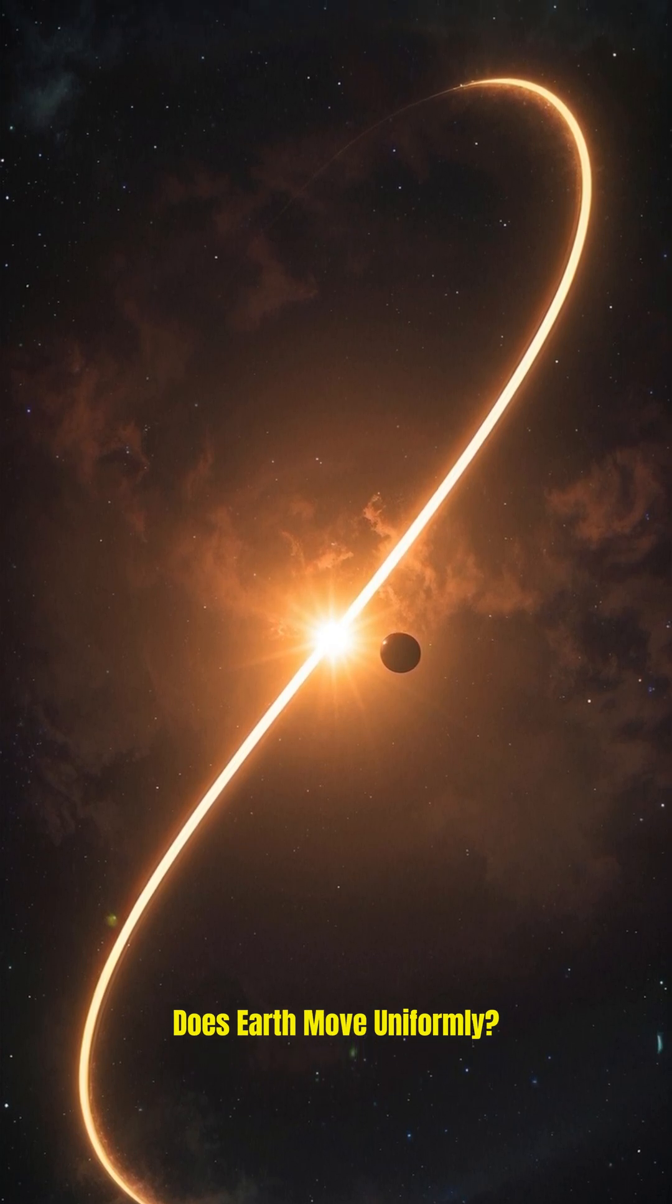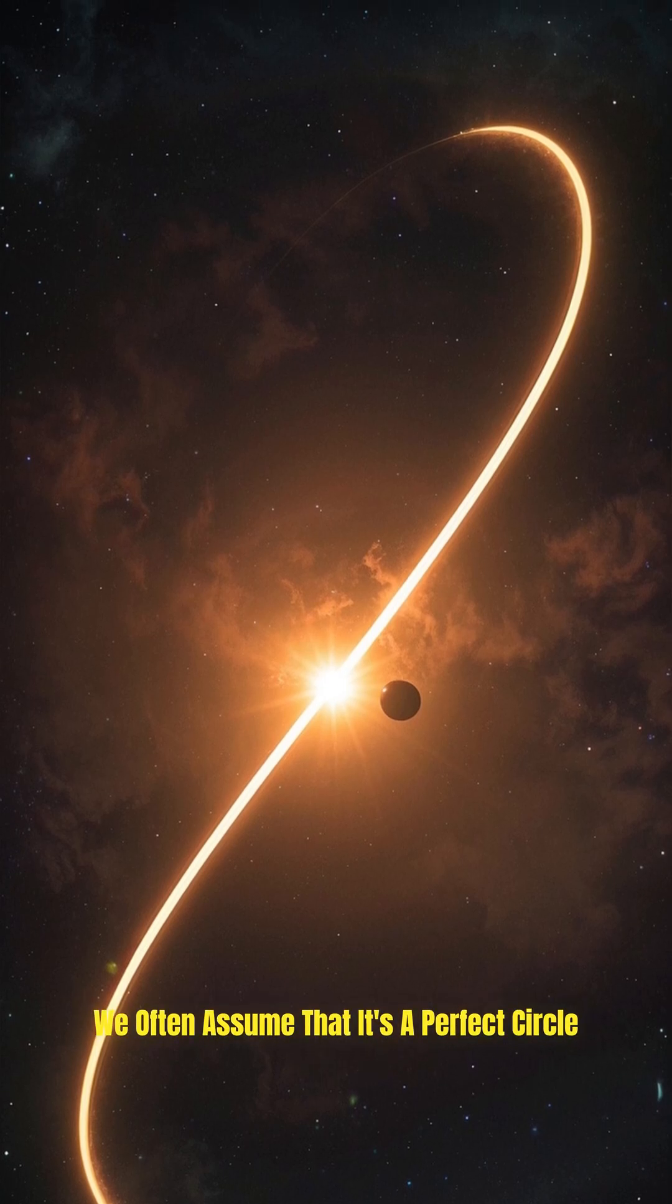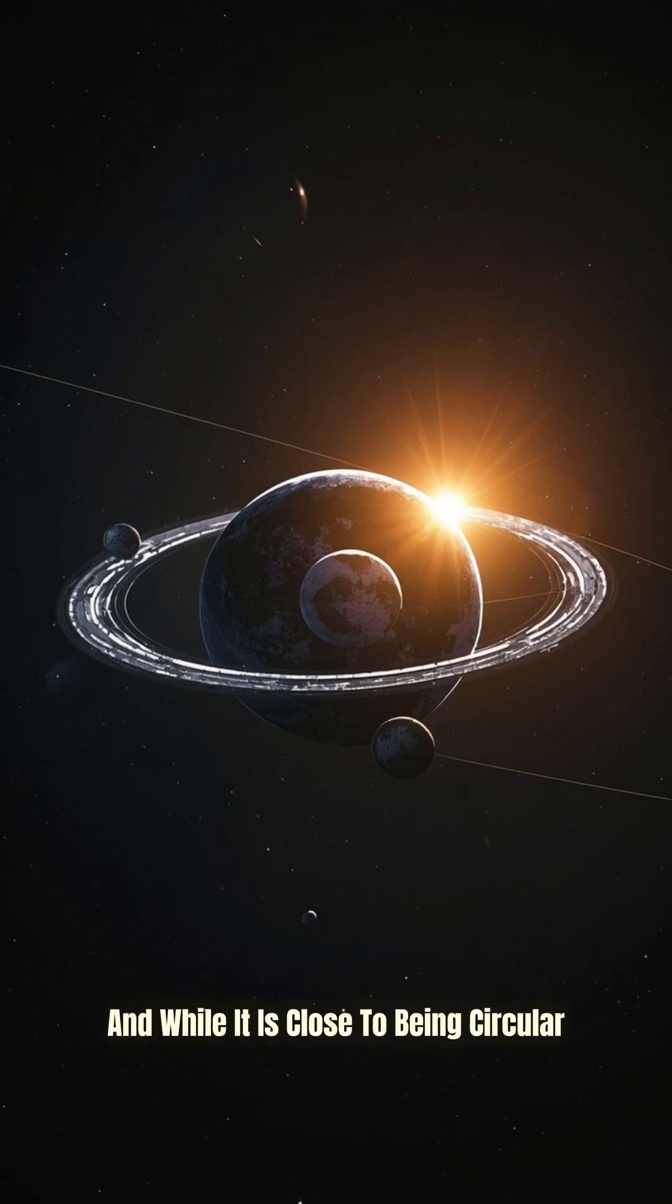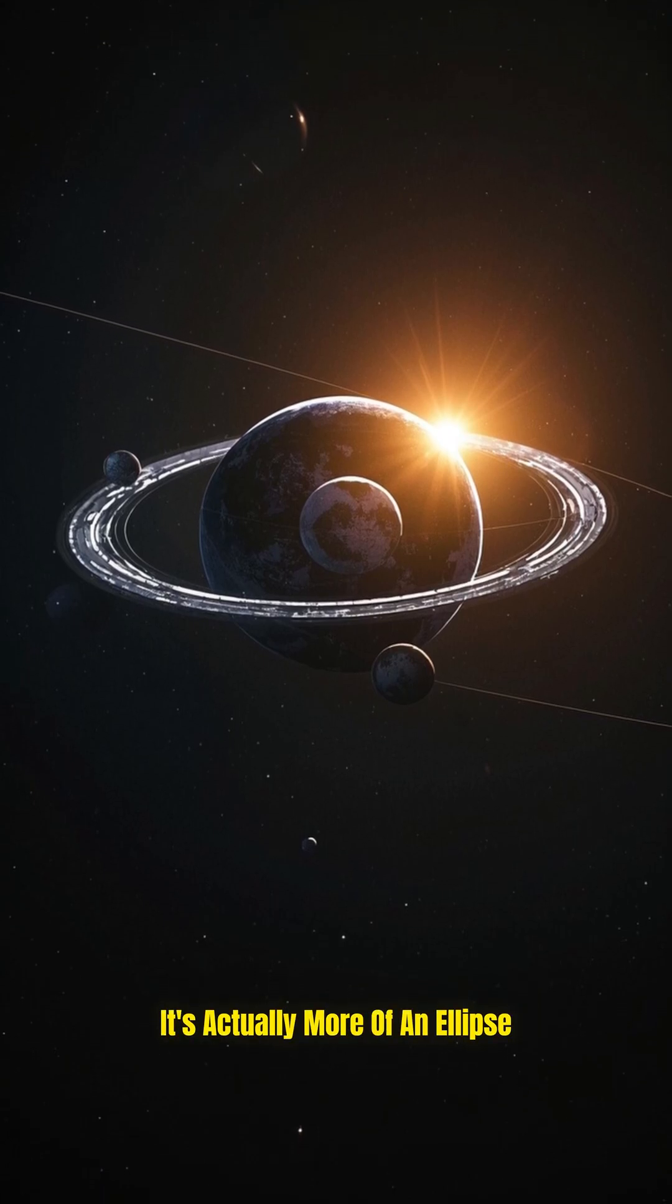Does Earth move uniformly? So when we talk about Earth's orbit around the Sun, we often assume that it's a perfect circle. And while it is close to being circular, it's actually more of an ellipse.